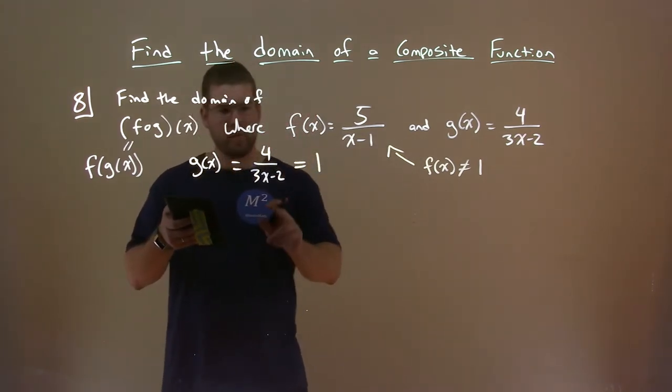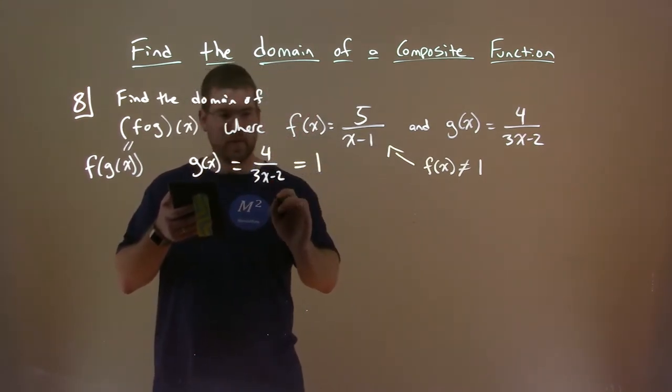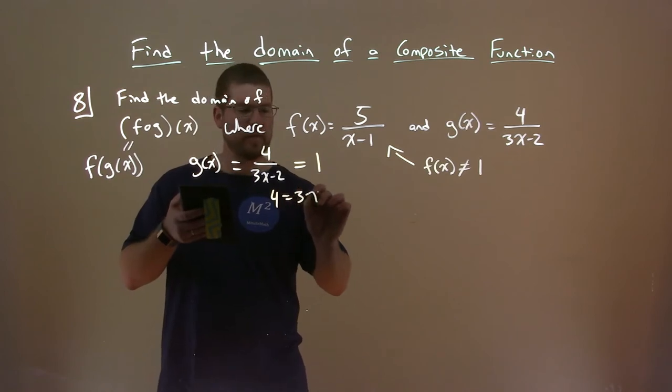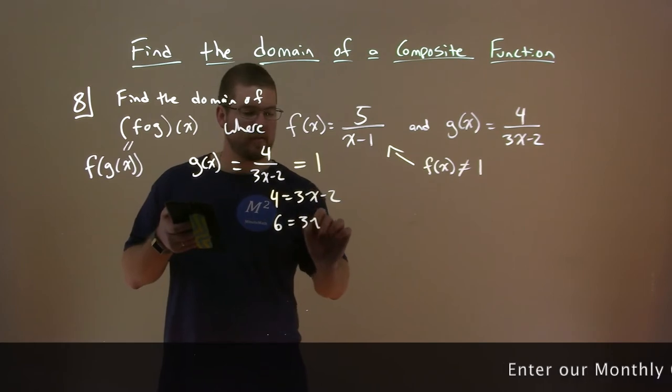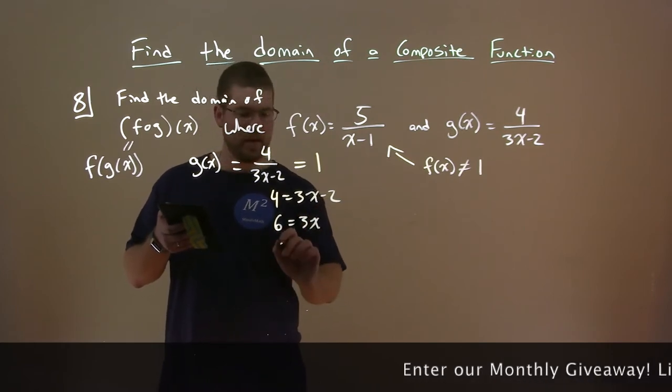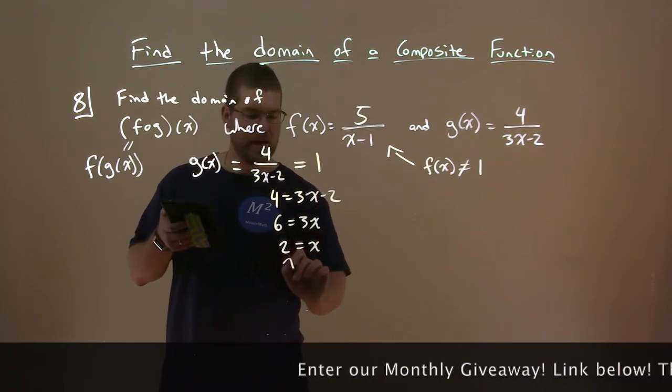So in doing so, we multiply both sides by 3x minus 2, and we have 4 equals 3x minus 2. Alright, then we add 2 to both sides, 6 equals 3x, divide both sides by 3, and 2 is equal to x, or x equals 2.